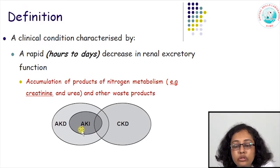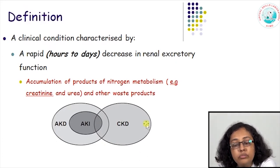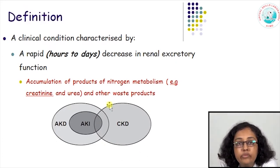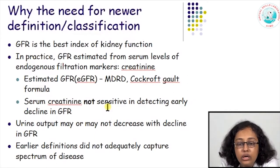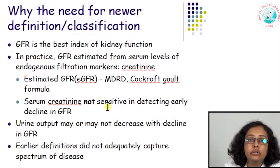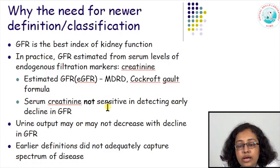Acute kidney injury or acute renal failure can occur in many settings — it could occur in a completely normal person, or in a person who already has some chronic or permanent kidney damage, in which case it is referred to as acute-on-chronic kidney disease or acute deterioration of kidney function. This was the simplistic definition of acute kidney injury, but over the last few years there has been a change in understanding and definitions used for defining this problem.